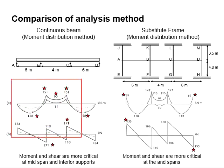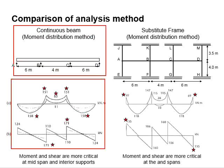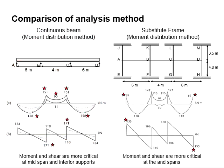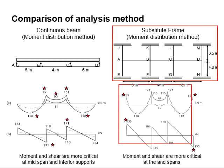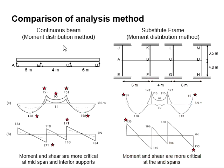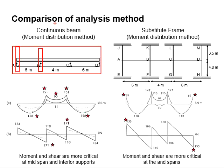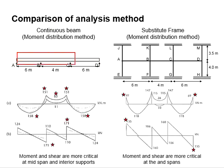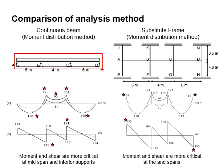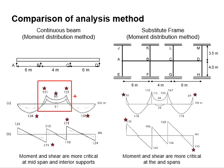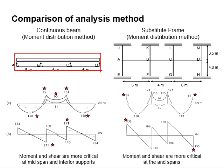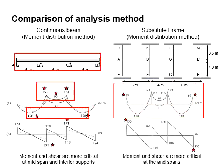The envelope bending moment and shear force diagram for the continuous beam method is given here. As for the subframe, the bending moment and shear force diagrams are given here. This analysis method ignores the contributions of the column in resisting the moment, meaning the moments are to be fully taken by the beam. The stresses are distributed within the beam until it reaches a state of stability in terms of fixed-end moment.